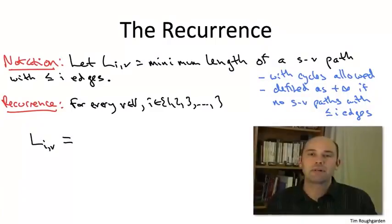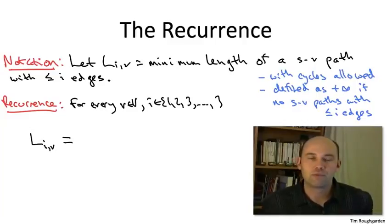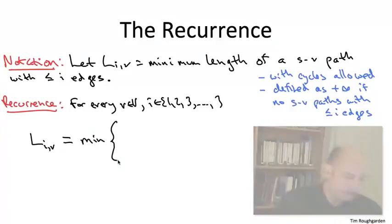That is, capital L sub IV, the optimal solution value for the subproblem with parameters I and V, is the best of all of the possibilities. So let me start with a minimum to take the best of the case one candidate and the case two candidate.